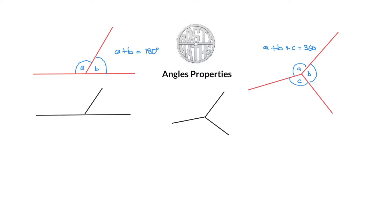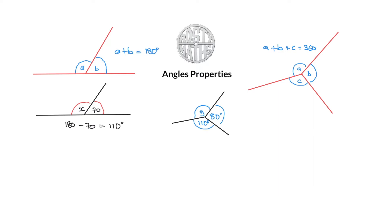Now let's put what we've learned into practice. I'm going to make a quick angle and call it 70 degrees, and I want to find the angle I'll call x. Because this is lying on a straight line and angles on a straight line add up to 180 degrees, all I have to do is 180 minus 70, which gives x equals 110 degrees. That's it — nice and simple.